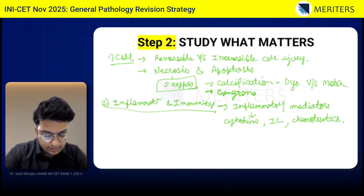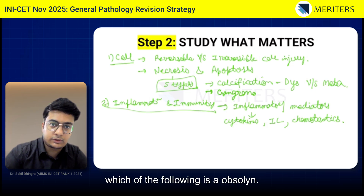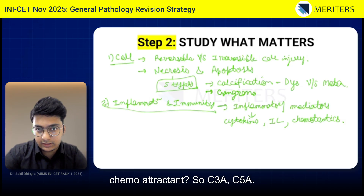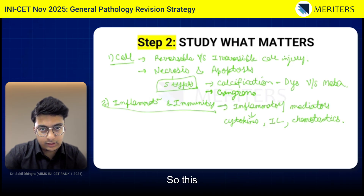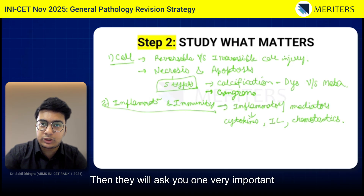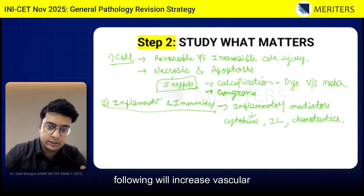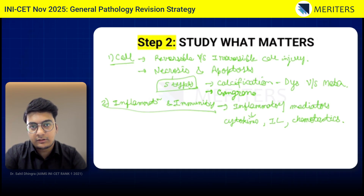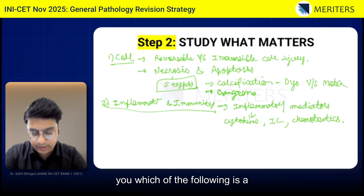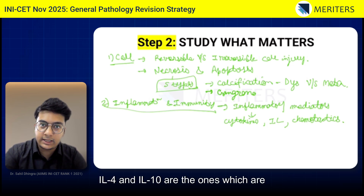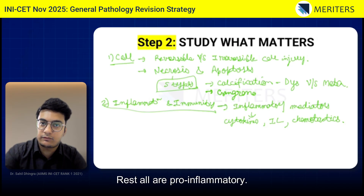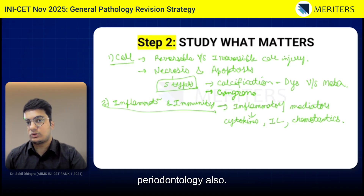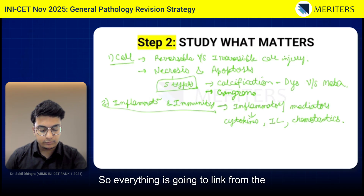In AIIMS, they will ask which of the following is an opsonin — so C3B, C5B are the opsonins. Similarly, which of the following is a chemotactic agent — C3A, C5A. Everything is in the table. They also commonly ask which of the following increases vascular permeability — bradykinin — or which does not increase it. In interleukins, they can ask which is an anti-inflammatory IL: IL-4 and IL-10 are anti-inflammatory; the rest are pro-inflammatory and cause bone resorption. You will cover parts of this in periodontology as well, so everything links from the inflammation and immunity chapter.